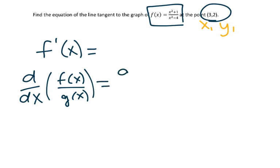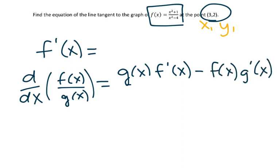The quotient rule states that it's the bottom, or g of x, times the derivative of the top, or f prime of x, minus the top times the derivative of the bottom all over the bottom squared. So that is the quotient rule.